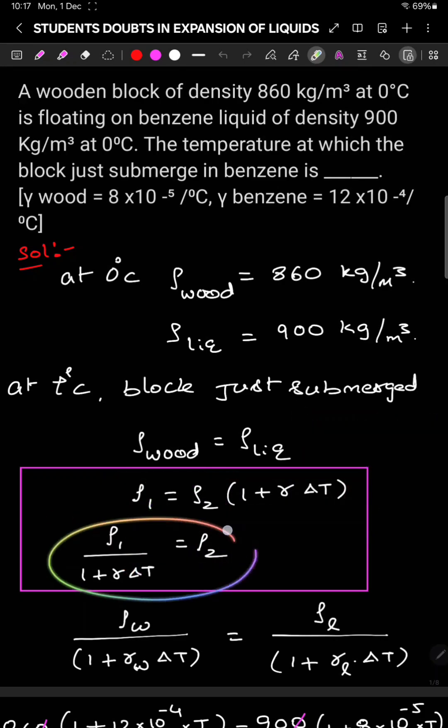Apply this formula for density of wood at t degree Celsius. So initial density of the wood, gamma of wood coefficient of volume expansion of wood. Initial density of liquid, coefficient of volume expansion of liquid.